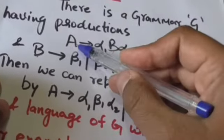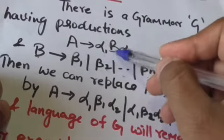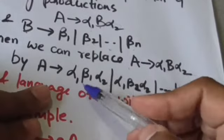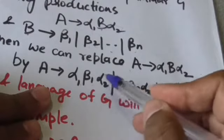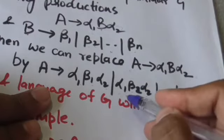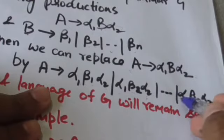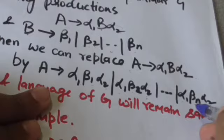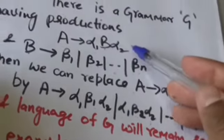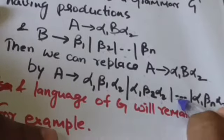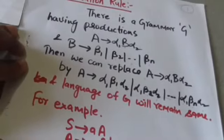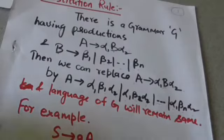Then we can replace the production A derives alpha_1 B alpha_2 from grammar G by these productions: A derives alpha_1 beta_1 alpha_2, A derives alpha_1 beta_2 alpha_2, A derives alpha_1 beta_3 alpha_2, and so on up to A derives alpha_1 beta_n alpha_2. When we replace this production by these productions in grammar G, the language of grammar G will remain the same.